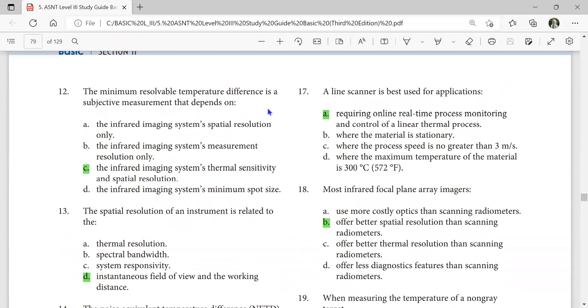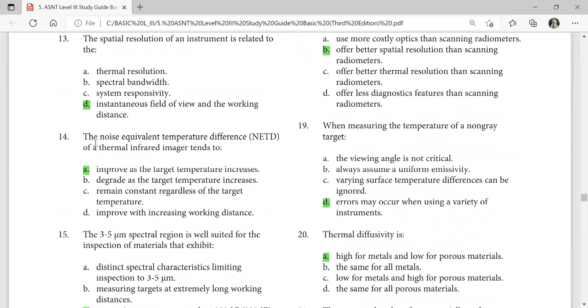The minimum resolvable temperature difference is subjective measurement that depends on the infrared imaging system's thermal sensitivity and spatial resolution. A line scanner is best used for applications requiring online real-time process monitoring and control of a linear thermal process. Most infrared focal plane array imagers offer better spatial resolution than scanning radiometers. The noise-equivalent temperature difference of a thermal infrared imager tends to improve as the target temperature increases. When measuring temperature of a non-gray target, errors may occur when using a variety of instruments. Thermal diffusivity is high for metals and low for porous materials.